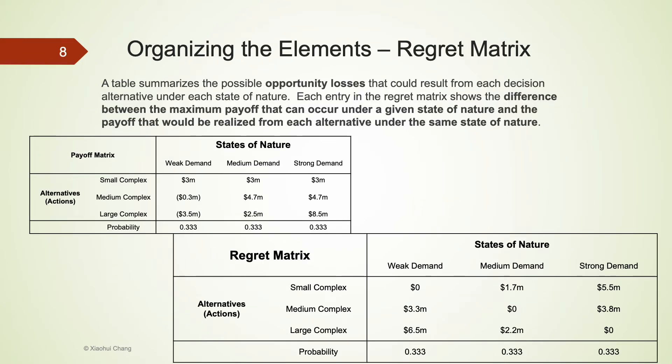Regret matrix is another way of organizing the information. Instead of showing payoff information, this matrix shows the opportunity loss of a given alternative under a given state of nature.